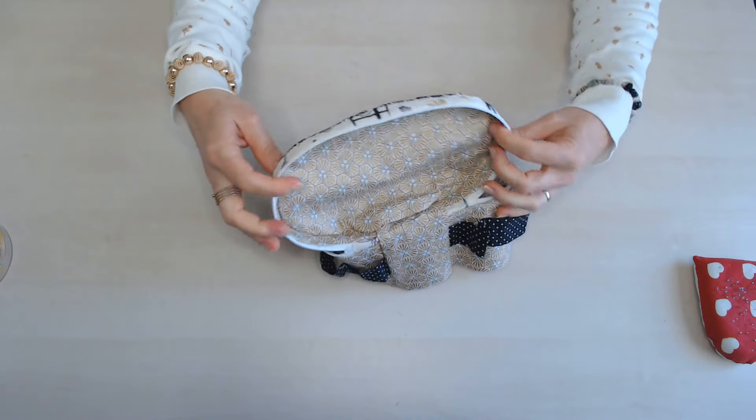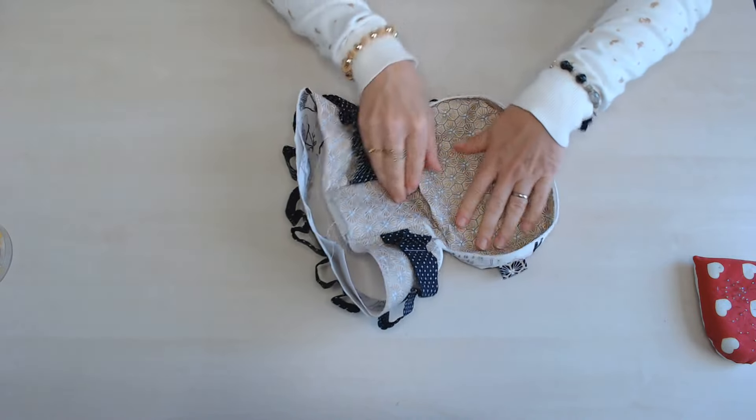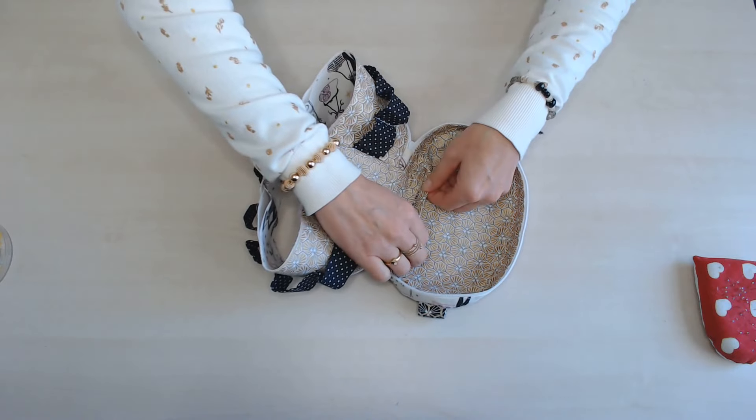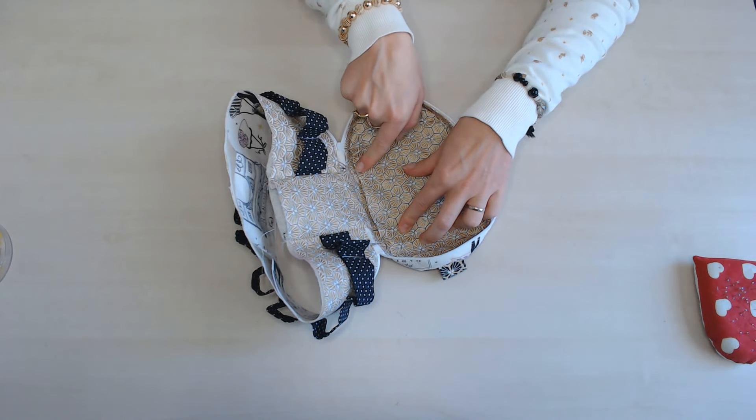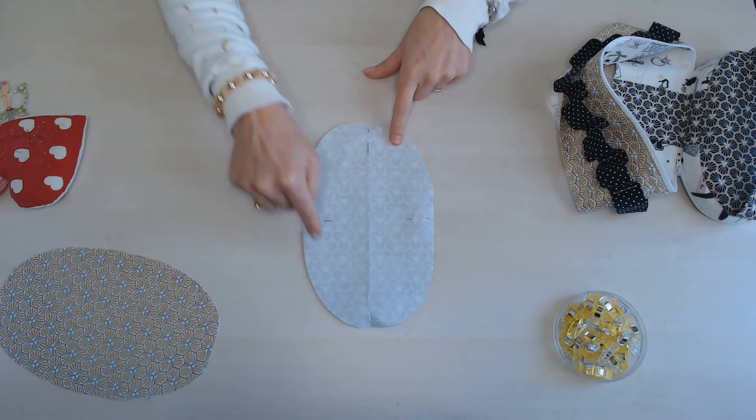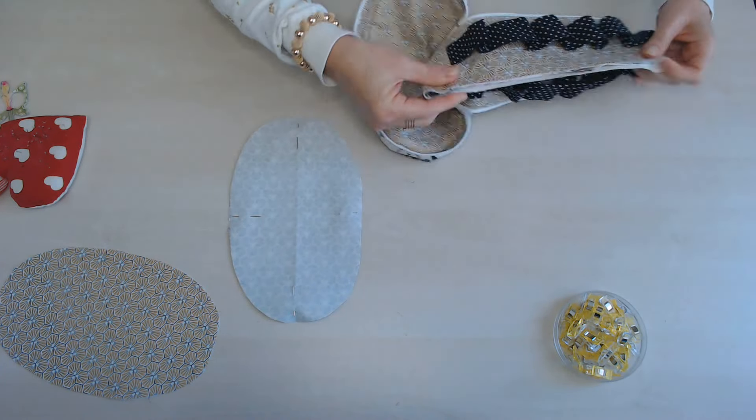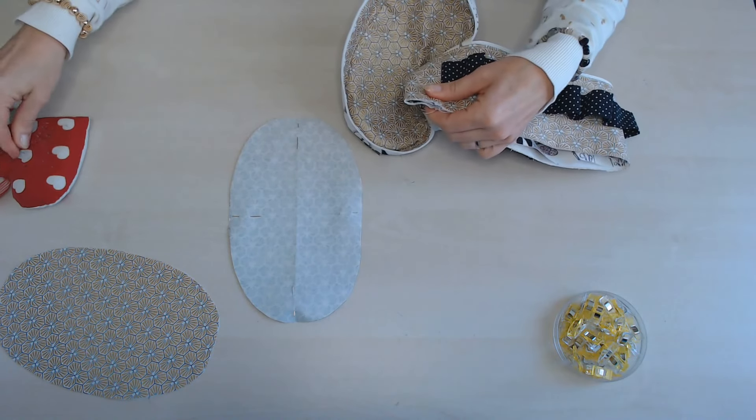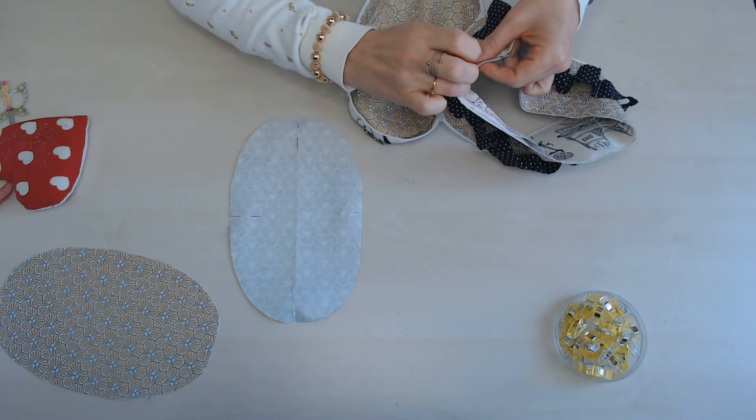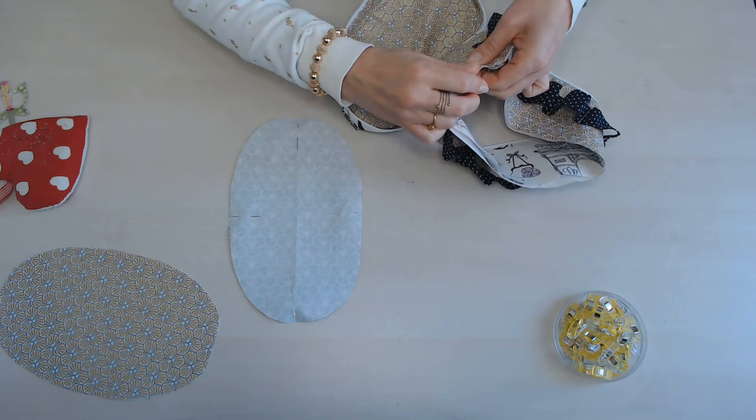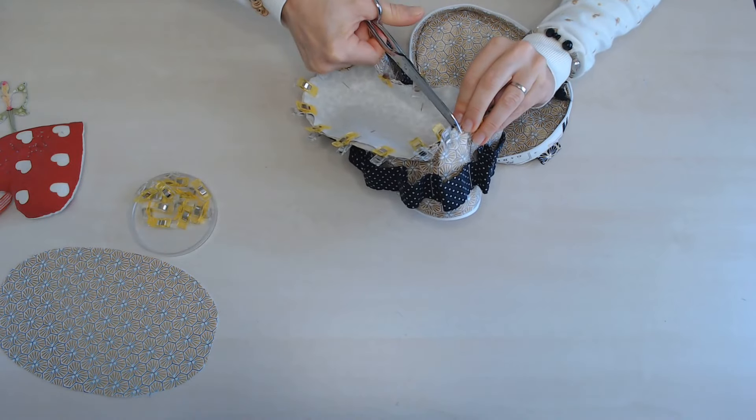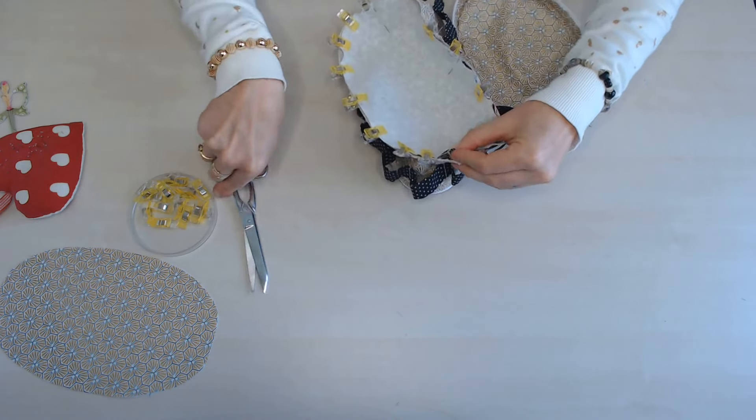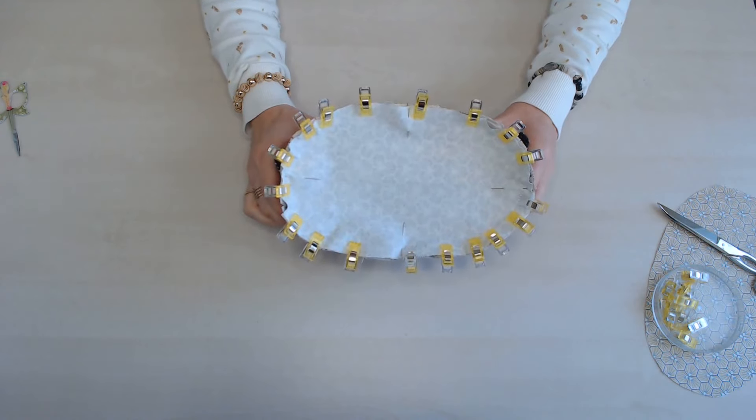La partie dessus est assemblée. Vous pouvez refermer cette partie en faisant une couture à la main ou alors avec un point à la machine en piquant au plus près du bord. On va maintenant assembler le bas. Donc on prend les repères. Et on assemble tout le tour.